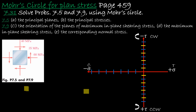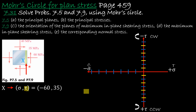Let's look at the x-face. The x-face has two coordinates: normal stress and shear stress. The normal stress is given as 60, but because it is compression, we put it as minus 60. The shear stress 35 is positive because if you take the vector representing the 35 MPa shear and place it at the edge of the stress element, it causes the element to rotate counterclockwise, and counterclockwise is positive shear.